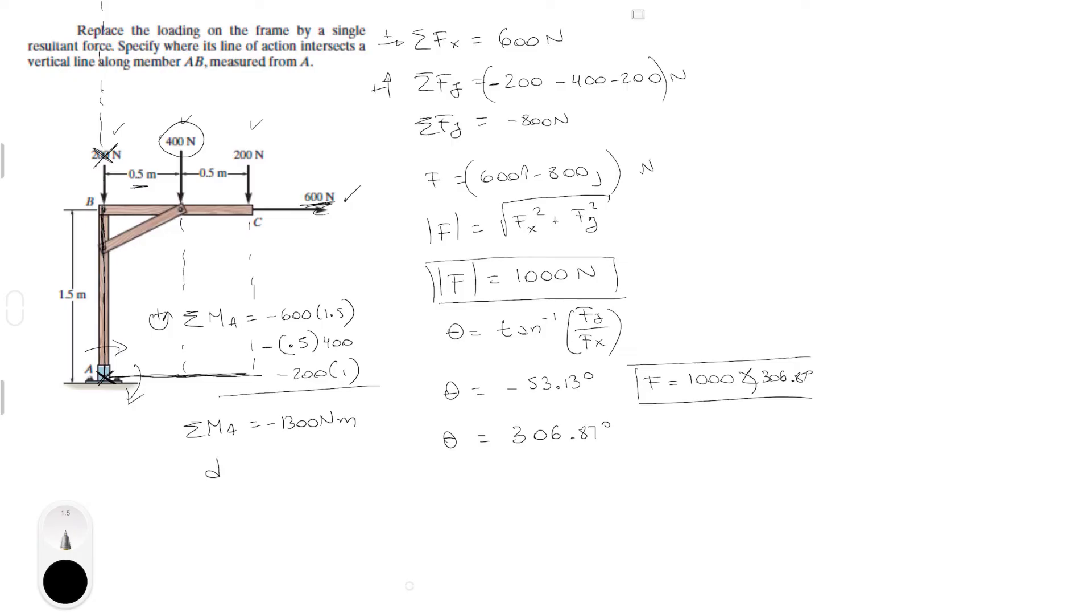And if you wanted to find the distance from A, you know that it's equal to the sum of the moments at A over the sum of the forces in the X because if you look at this force which is 600 minus 800 it looks something like this, 600, 800 slightly longer so this is how the force really looks.